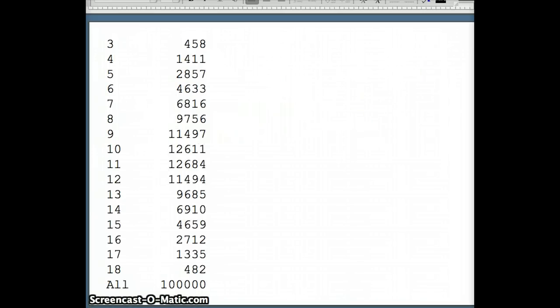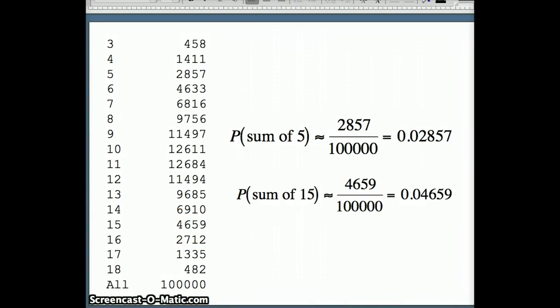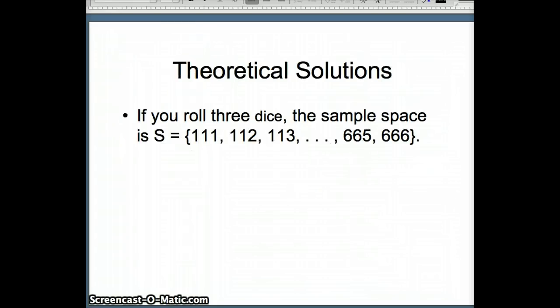And then we're going to tabulate the results by saying table C4 to see how often we have various numbers. So here's the numbers we're looking at, and I'm interested in five. So how often did we get five on the roll of three dice? 2,857 out of 100,000. So that's our probability there. And for 15, 4,659 also out of 100,000, and there's our probability for a sum of 15.